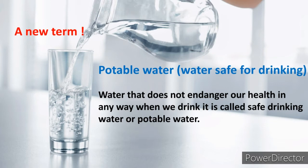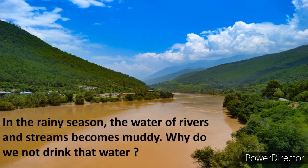In the rainy season, the water of rivers and streams becomes muddy. This is because the mud or soil at the bottom of the river, and at the sides, gets mixed into the river or stream. We do not drink that water because all the mud and other materials — impurities — mixed in the water can harm our health. We can fall ill after drinking such water. That is why we cannot drink muddy water in the rainy season.